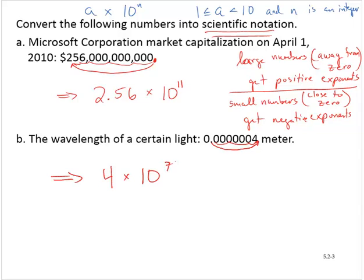But wait a second. Is this a large number or a small number? Well, 0.0000004 is pretty close to 0, negative exponent. All right. So we'd have 4 times 10 to the negative 7 meter.